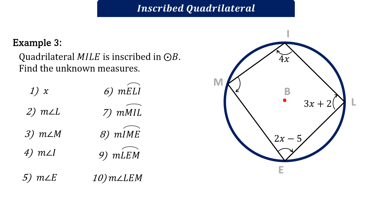In this example, number 3, quadrilateral MILE is inscribed in circle B. Find the unknown measures: number 1, value of X; number 2, measure of angle L; number 3, measure of angle M; number 4, measure of angle I; number 5, measure of angle E; number 6, measure of arc ELI; number 7, measure of arc MIL; number 8, measure of arc IME; number 9, measure of arc LEM; and number 10, measure of angle LEM.